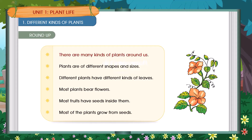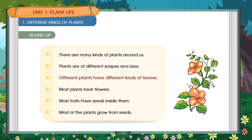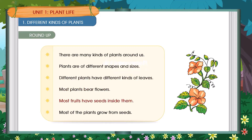Roundup. There are many kinds of plants around us. Plants are of different shapes and sizes. Different plants have different kinds of leaves. Most plants bear flowers. Most fruits have seeds inside them. Most of the plants grow from seeds.